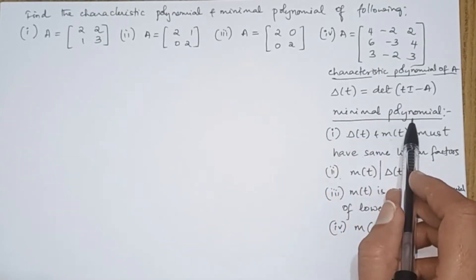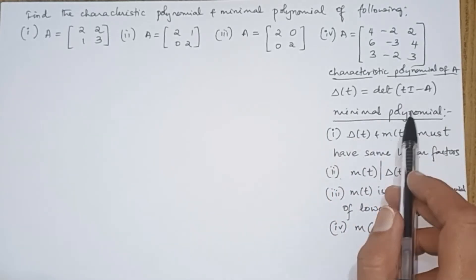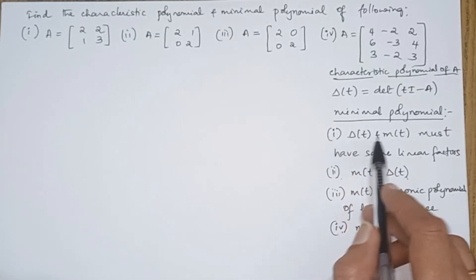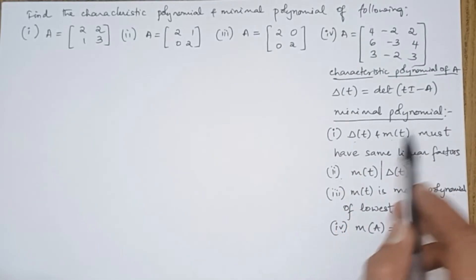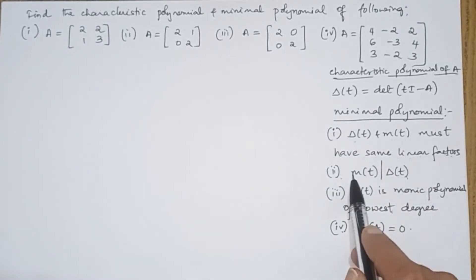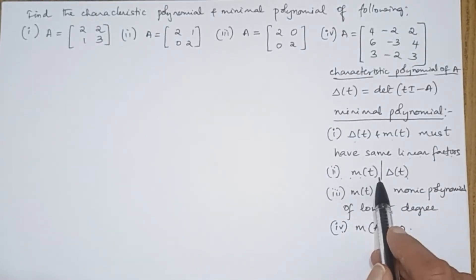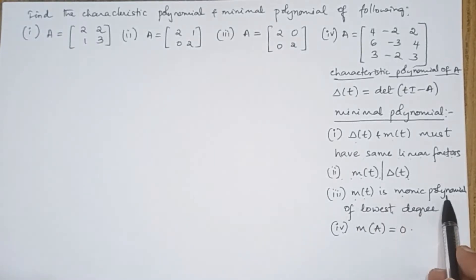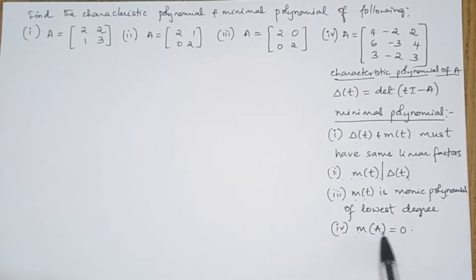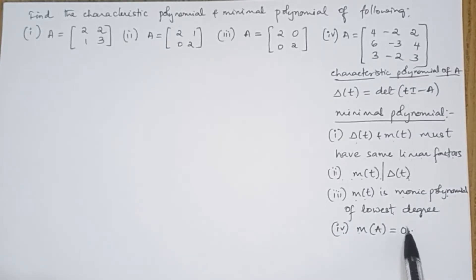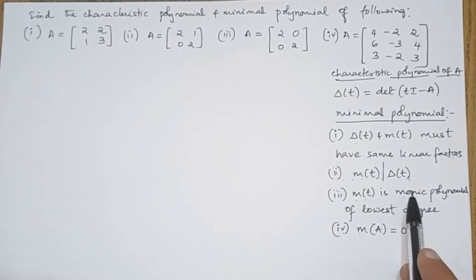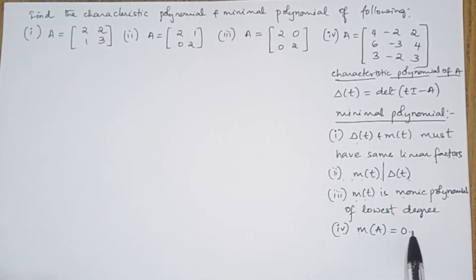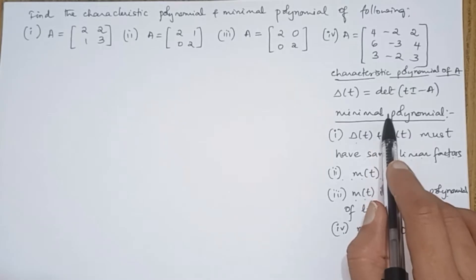For any polynomial to be a minimal polynomial, the conditions are: the minimal polynomial and the characteristic polynomial must have the same linear factors. Second, M(T) must divide delta(T), and that polynomial should be monic and of lowest degree. Third, M(A) must equal 0, meaning A must be a root of that polynomial. If any polynomial satisfies all these conditions, we call it the minimal polynomial.